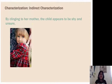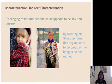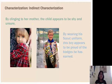By clinging to her mother, the child appears to be shy and unsure. Instead of telling you that the character is shy, the author might show that the child is clinging to her mother and imply that she is shy. By wearing his Boy Scout uniform, this boy appears to be proud of the badges he has earned. The author might describe the way this character is standing with his badges from Boy Scouts proudly displayed.